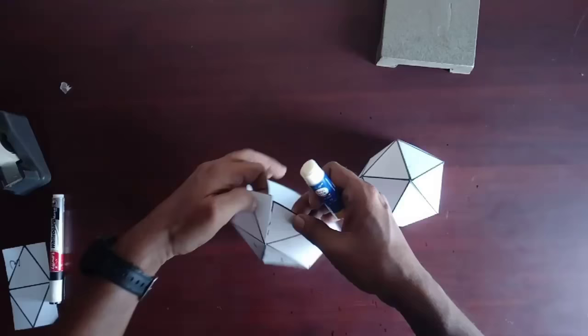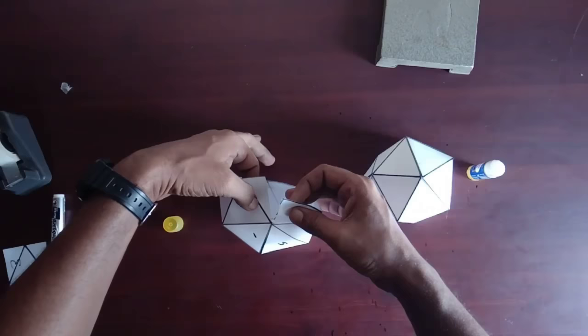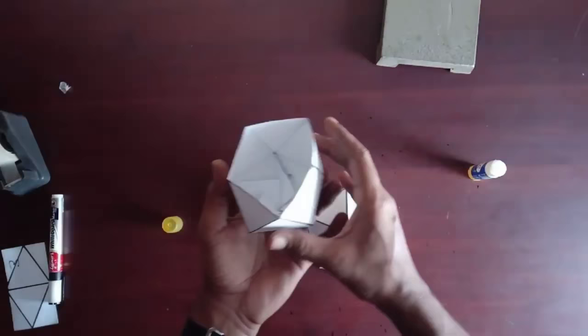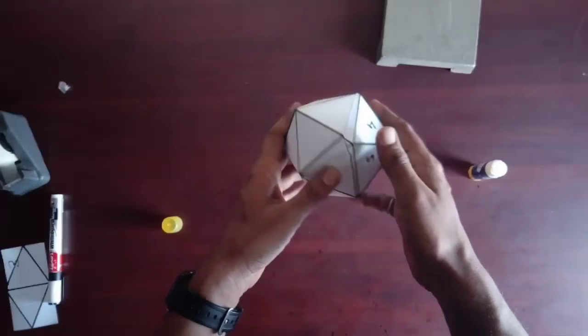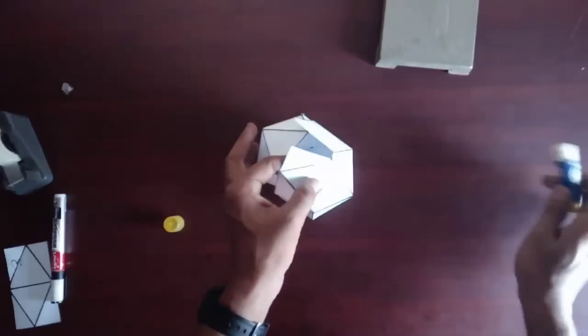Now take one model and join the lower part by placing the full triangle over the half triangle like this. Insert this part into the other part. Finally join the lower part by sticking the full triangle over the half triangle.